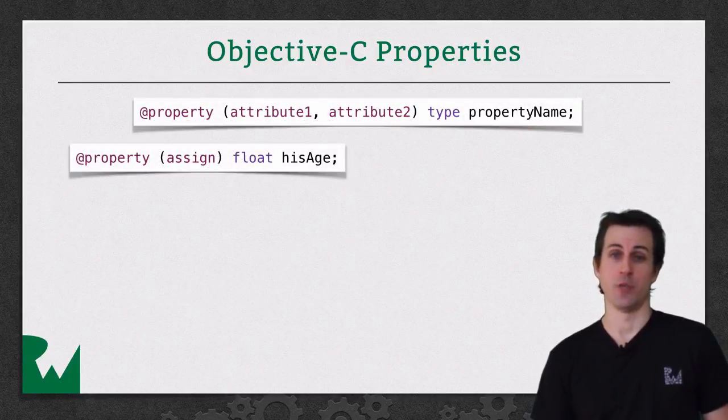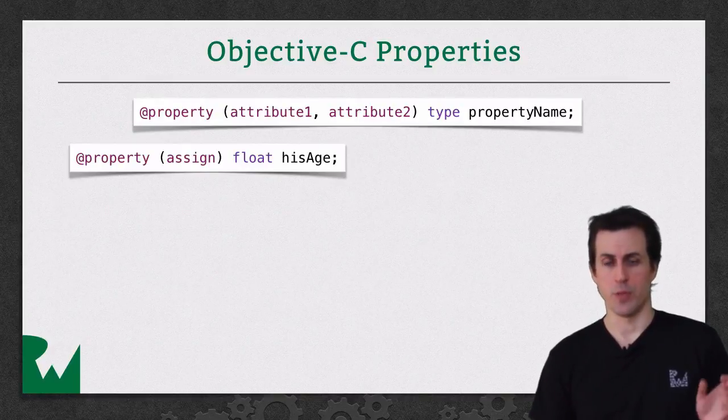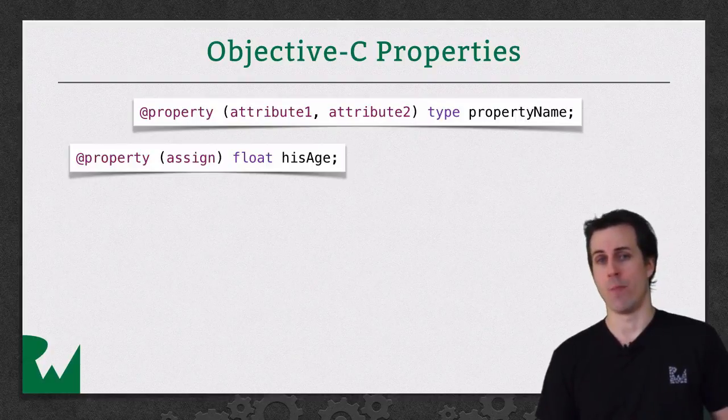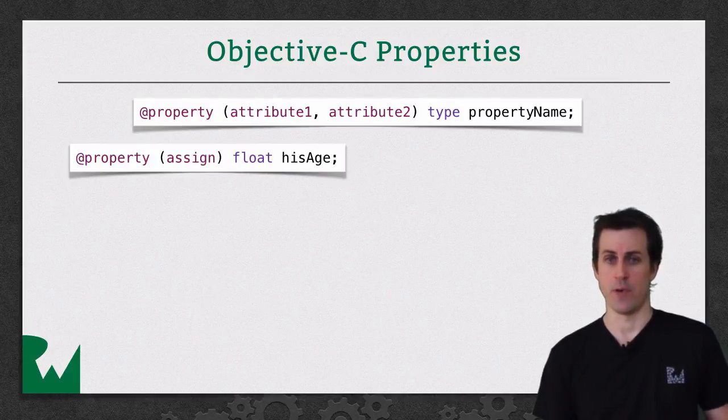Here's how you define a property in Objective-C. First you put the @property keyword, then you put a number of attributes on the property, and then you give the property a name. That's it. There used to be more steps such as using synthesize, but you don't need those in modern Objective-C anymore.